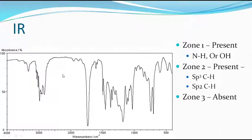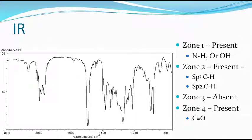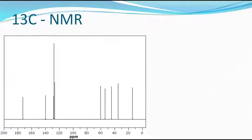It may be also a benzyl or other group. The CH2 group in benzyl or other groups can give rise to this SP3 CH peak. Zone 3 is absent, but zone 4 is present — it is a typical carbonyl stretching, therefore carbonyl is present. So we have identified a benzyl group, an amine, and a carbonyl group. It may be an amide or another carbonyl compound.